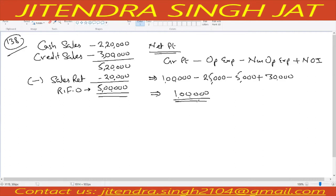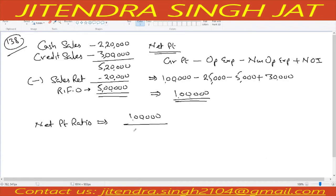So net profit after tax is 1 lakh. Now let me calculate the net profit ratio. Net profit ratio = net profit after tax (1 lakh) divided by revenue from operations (5 lakh), multiplied by 100, is equal to 20 percent.